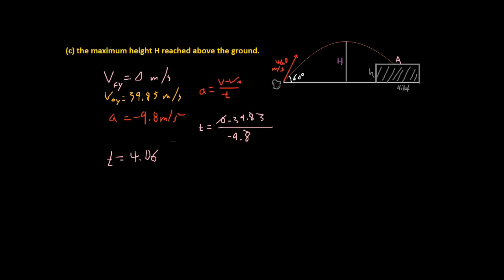Now you might be asking: why do we just calculate for t when we need the height? Well, let's look at our y-equation: y = v₀y·t + ½·a·t². This equation requires us to use t. So let's plug our values in — v₀y is 39.83.